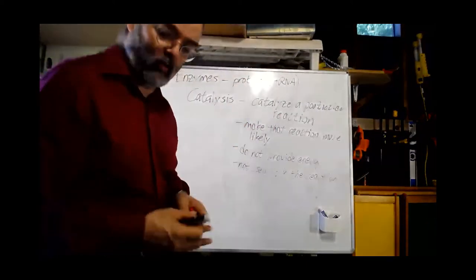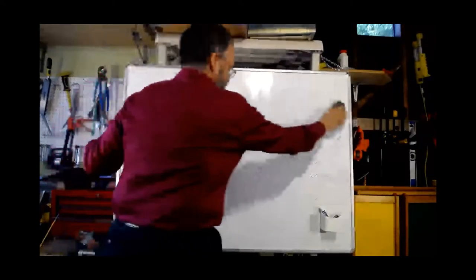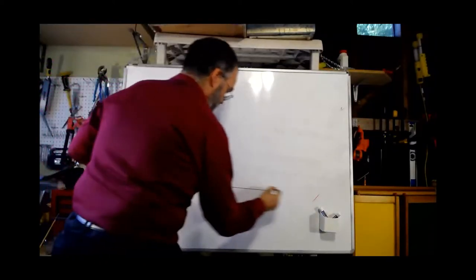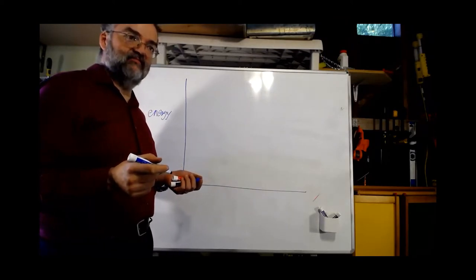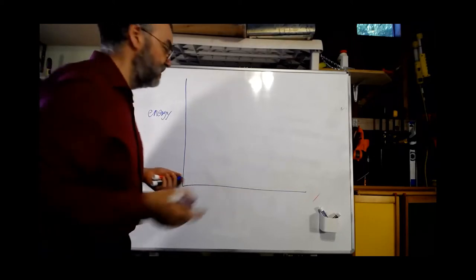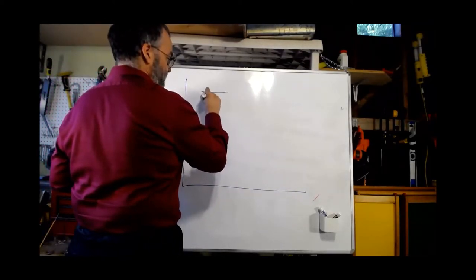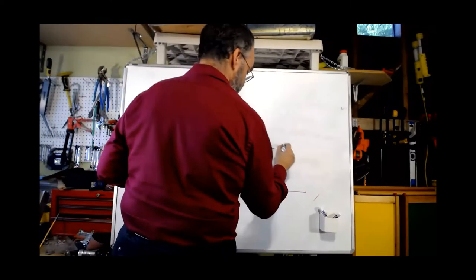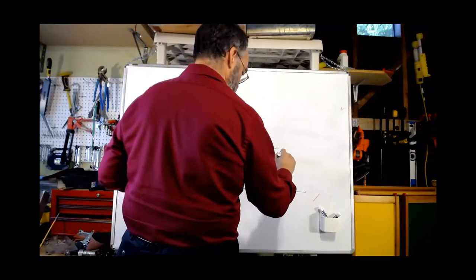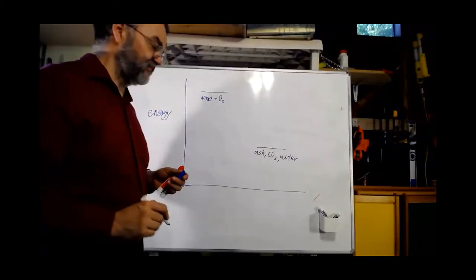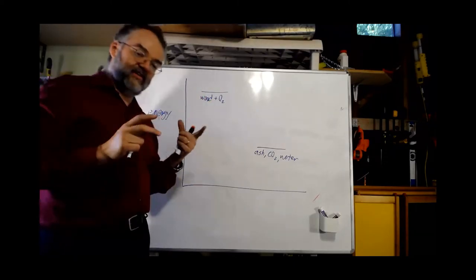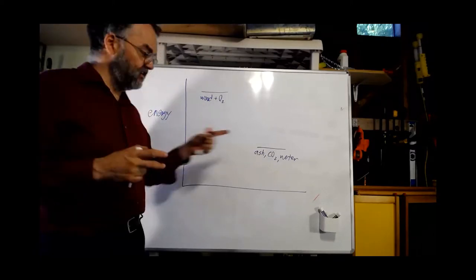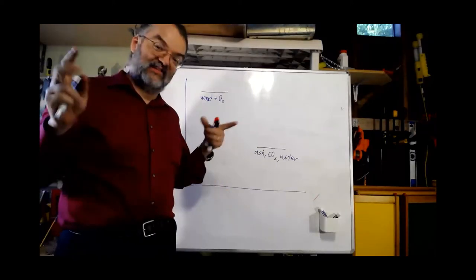To understand how enzymes work, we need to talk about reaction energy. Consider burning wood at a campfire: wood plus oxygen gives ash, CO₂, and water. On an energy diagram, wood — as a large, complex set of biomolecules — has a lot of stored energy, whereas ash and CO₂, being more disorganized and free, have less energy available. Going from wood to those products means going from higher energy to lower energy.